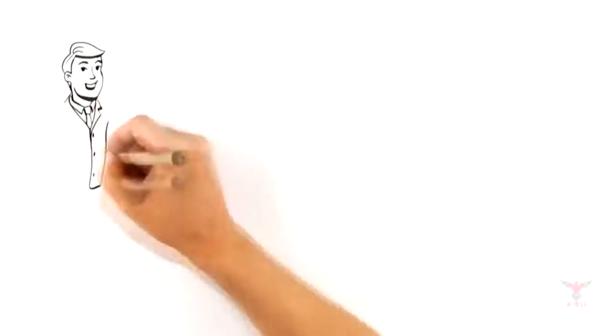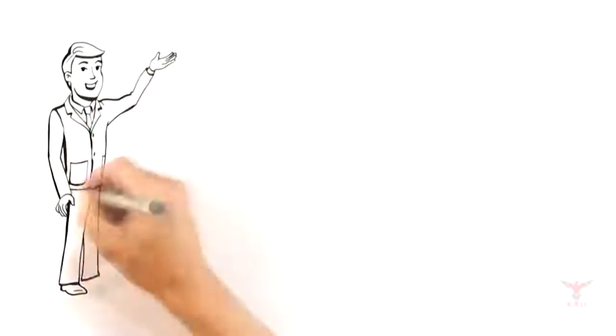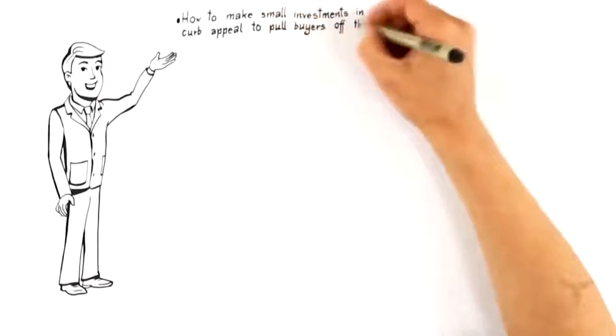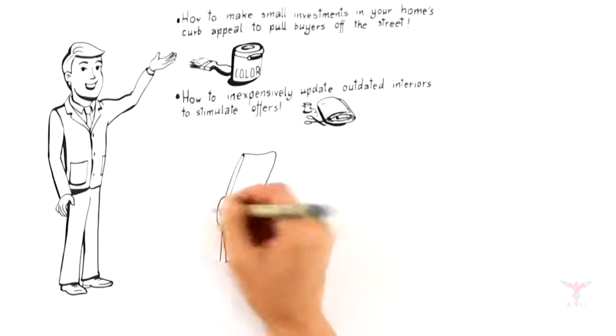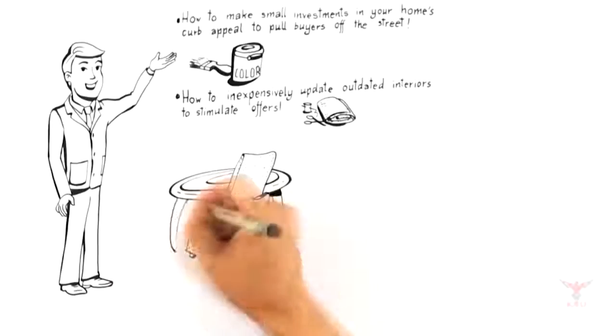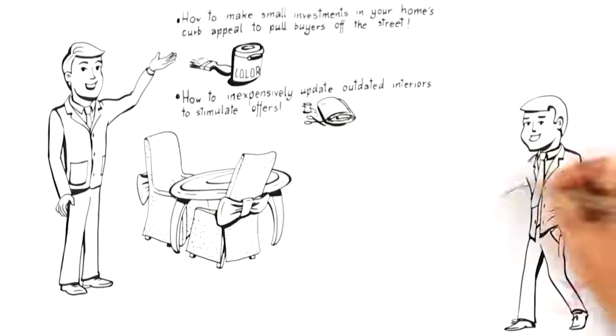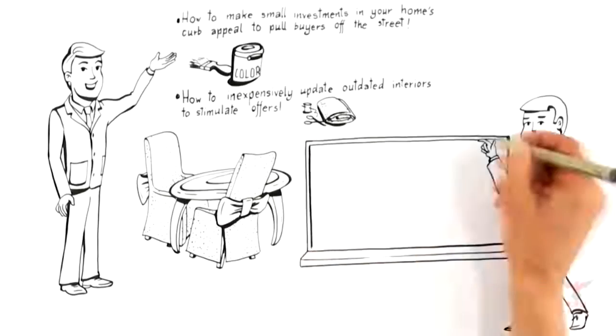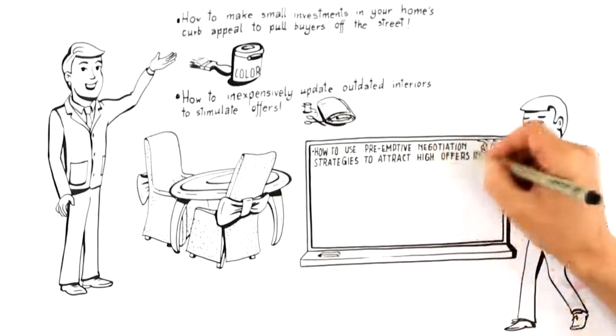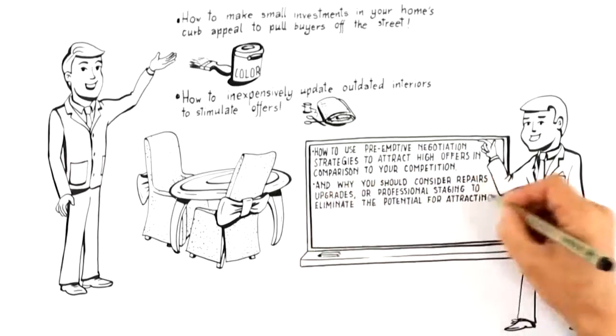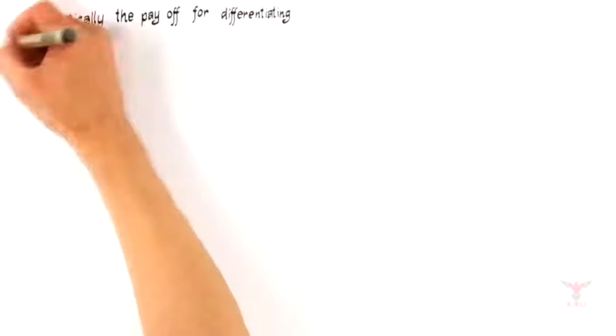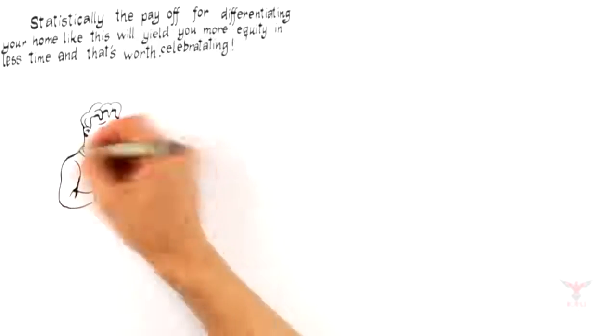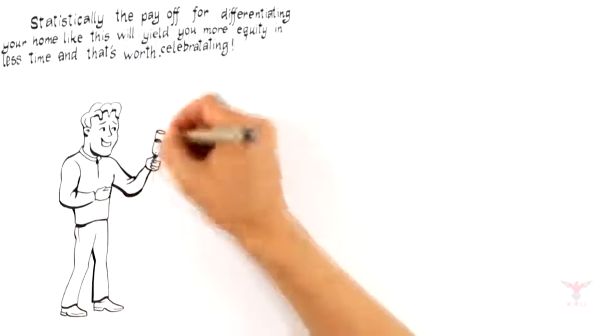This means the advice you should receive to attract buyers like this must include how to make small investments in your home's curb appeal to pull buyers off the street, how to inexpensively update outdated interiors to stimulate offers, how to use preemptive negotiation strategies to attract high offers in comparison to your competition, and why you should consider repairs, upgrades, or professional staging to eliminate the potential for attracting low offers. Statistically, the payoff for differentiating your home like this will yield you more equity in less time, and that's worth celebrating.